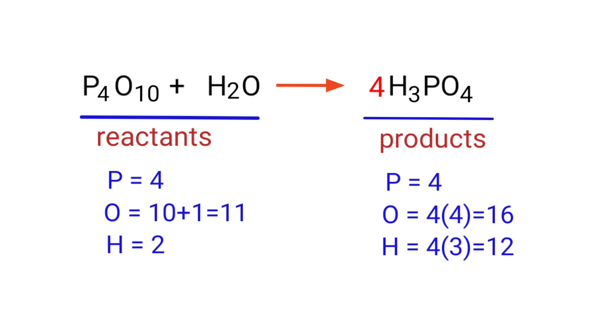The phosphorous atoms are balanced. Now we need to balance the hydrogen and oxygen atoms. To do this, we need to put a coefficient of 6 in front of H2O.